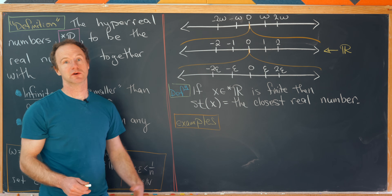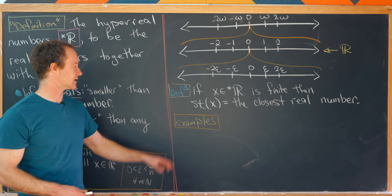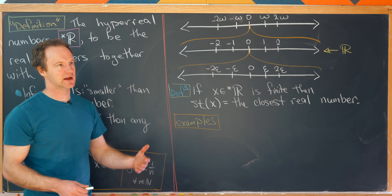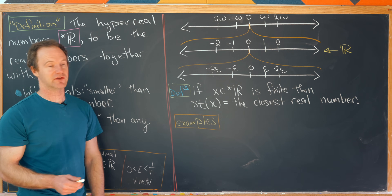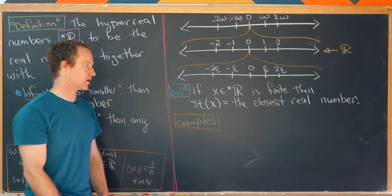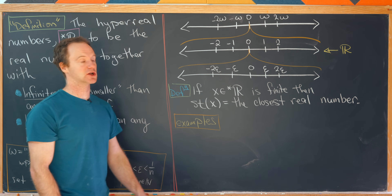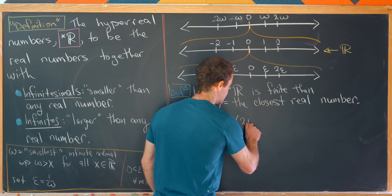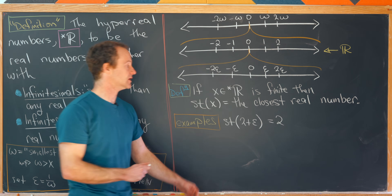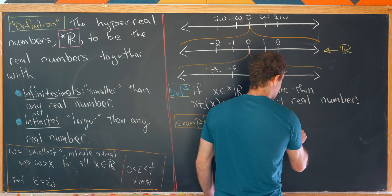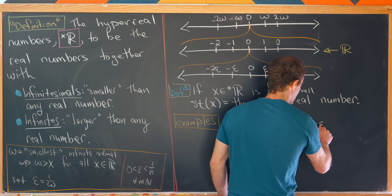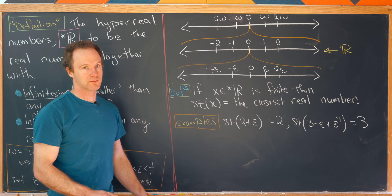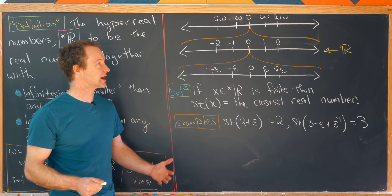Now let's look at a definition that will help us find derivatives using hyperreal numbers. If x is a finite hyperreal number — meaning it has only a real part and an infinitesimal part, no infinite part — then the standard part of x is the real number closest to x. For example, the standard part of 2 plus epsilon is simply 2. The standard part of 3 minus epsilon plus epsilon to the fourth power is 3, because epsilon and epsilon to the fourth are both infinitesimals.